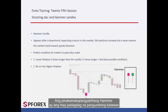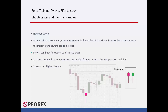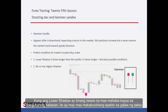The most powerful hammer is the one with an increasing main body, where the close price is higher than the open price with no upper shadow. If the lower shadow is five times longer than the main body, it would have a more considerable effect on the trend movement.